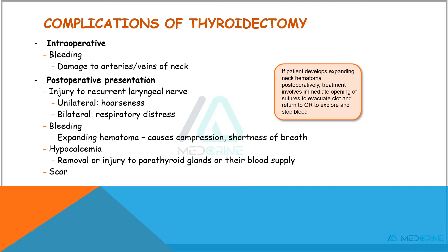What are the complications of thyroidectomy? Complications can be classified into intraoperative or post-operative complications. Intraoperatively, one of the major complications is bleeding due to damage to the arteries and veins of the neck. Post-operatively, we may have injuries to the recurrent laryngeal nerve, either unilaterally or bilaterally. We can also have bleeding from an expanding hematoma that can cause airway compromise. If a patient develops an expanding neck hematoma post-operatively, we need to immediately open the sutures to evacuate the clot and return the patient to the operating room to stop the bleeding. These patients are also prone to developing hypocalcemia after removal or injury to the parathyroid glands or their blood supply.